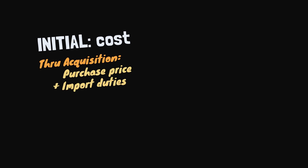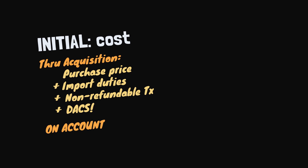An intangible asset is initially measured at cost. If it is acquired separately, the cost includes the purchase price, import duties, and non-refundable taxes net of trade discounts, plus directly attributable costs, or DACs, to prepare the asset for its intended use — for example, the cost of testing. However, if the entity defers payment beyond normal credit terms, the cost equals the cash price equivalent: the down payment plus the present value of future cash payments, with interest expense recognized over the credit period.